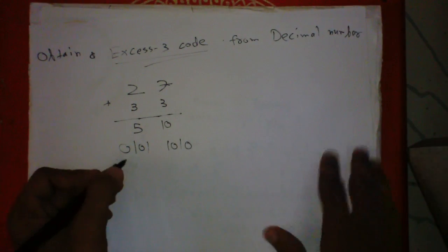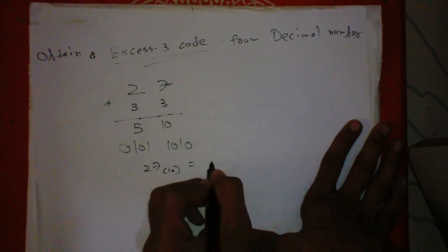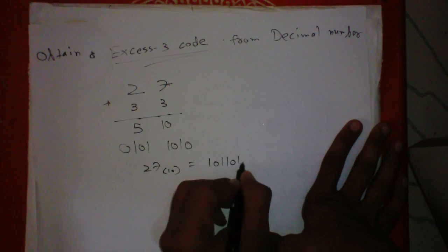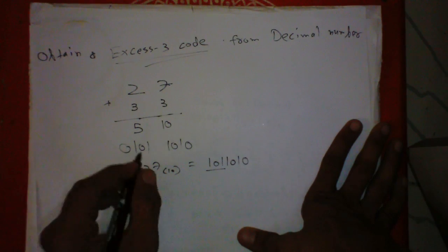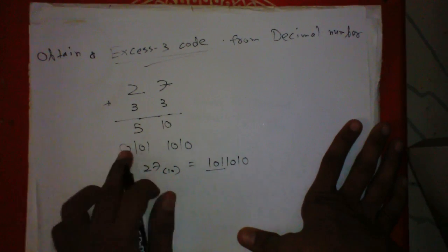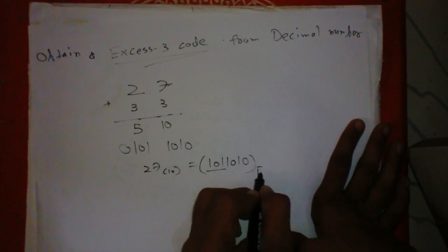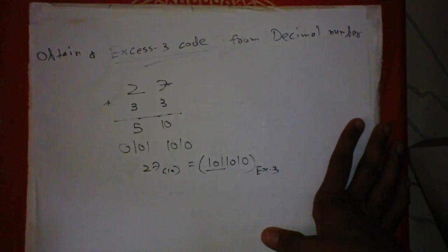So the Excess-3 code of 27 is 01011010. This is the method of how we calculate Excess-3 code for any decimal number.